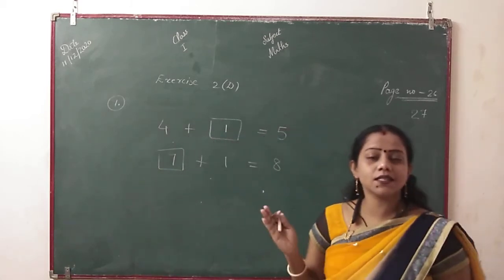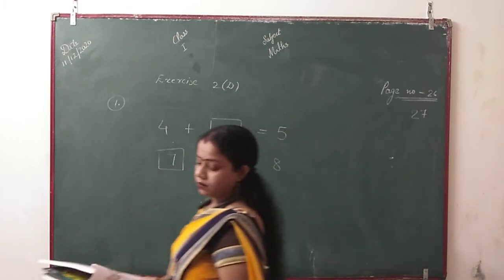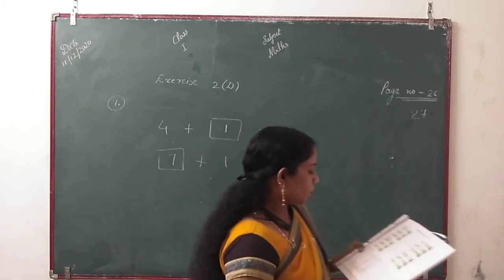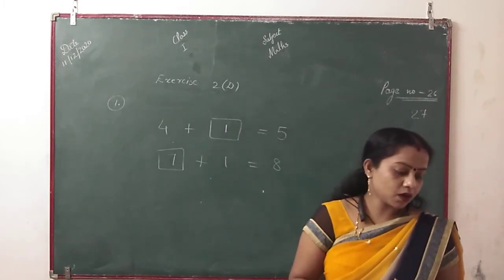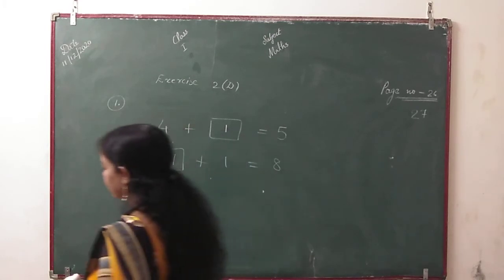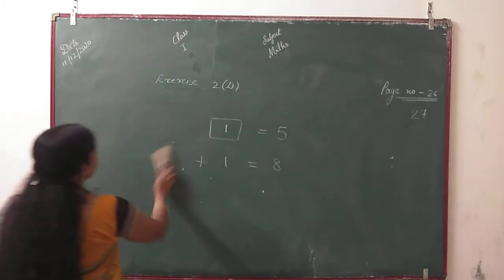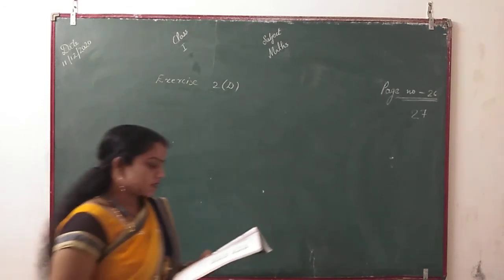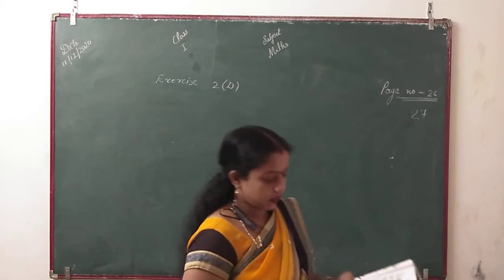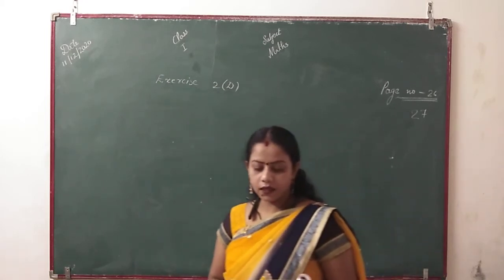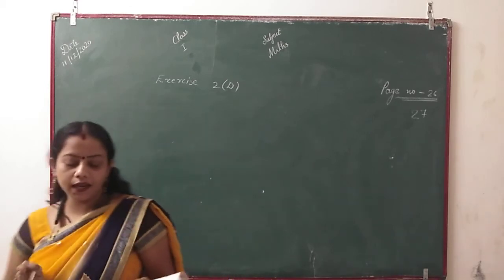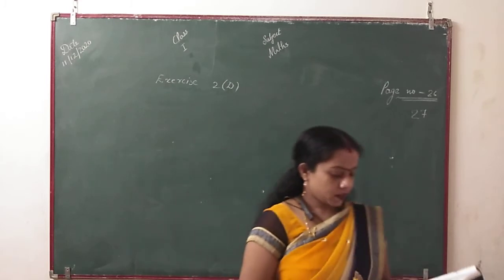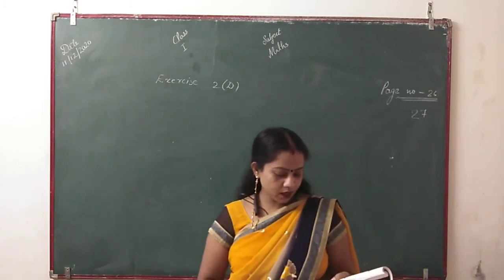This relates to the addition of 1 property. Second question: fill in the boxes. 2 plus 0 — when we add 0, the answer is the number itself. So 2 plus 0 is equal to 2. Next: 9 plus 0 is equal to 9. 0 plus 3 is equal to 3. 8 plus dash is equal to 8 — so what did we add? 0.